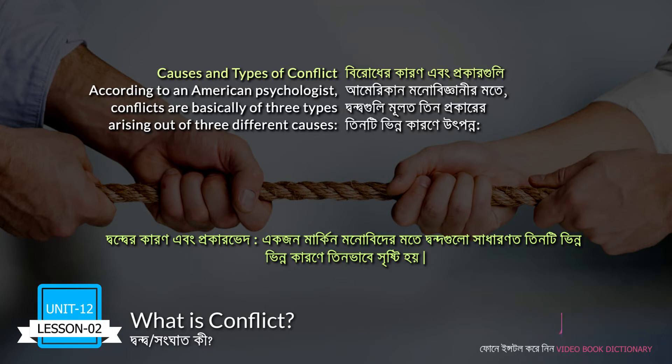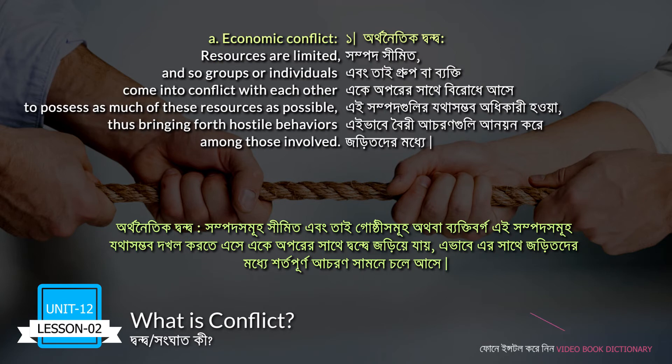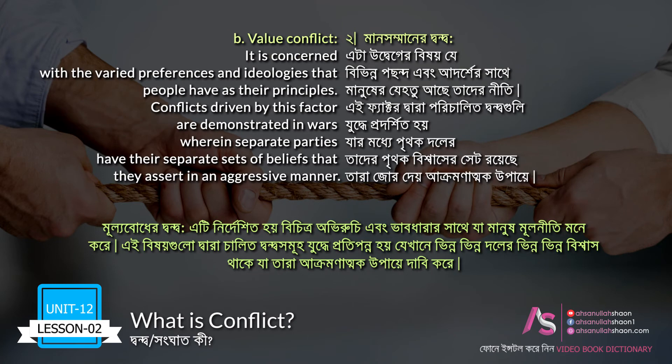Causes and types of conflict: According to an American psychologist, conflicts are basically of three types arising out of three different causes. A: Economic conflict — resources are limited, and so groups or individuals come into conflict with each other to possess as much of these resources as possible, thus bringing forth hostile behaviors among those involved.